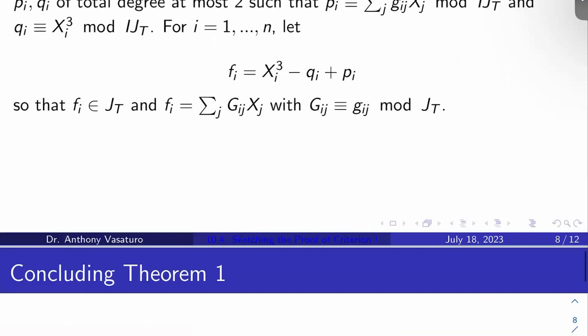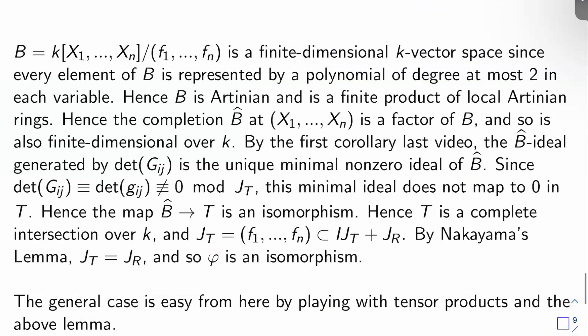Let's conclude the proof of Theorem 1. Set B equal to K bracket X_1 through X_n mod F_1 through F_n, using the F_i's we just found. This is a finite-dimensional K-vector space because every element of B is represented by a polynomial of degree at most two in each variable by construction. So B is Artinian — a finite product of local Artinian rings. If you complete B at the ideal generated by X_1 through X_n — call this B-hat — this must be a factor of B, which is a basic fact about Artinian rings, so B-hat is also finite-dimensional over K.